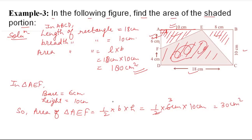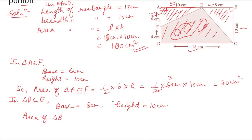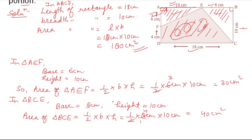Now for the other triangle BCE: the base is 8 cm and height is 10 cm. Area of triangle BCE = ½ into B into H = ½ into 8 into 10 = 40 square centimeters.